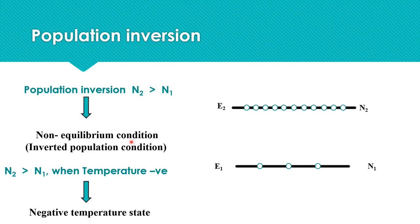According to Boltzmann's equation, this N2 > N1 is possible when temperature is negative. So this state is also known as negative temperature state.